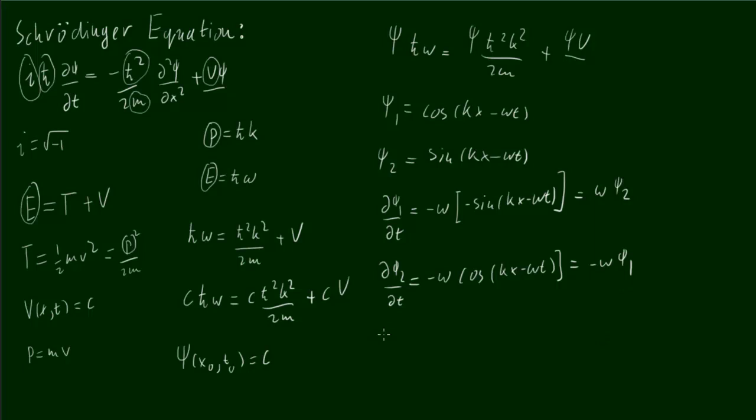Similarly, when we differentiate with respect to space, we get d squared psi 1 over dx squared equals minus k squared times cos(kx minus omega t), which just equals minus k squared psi 1.